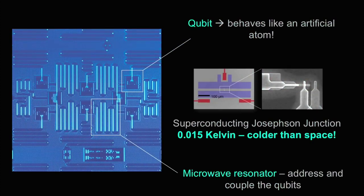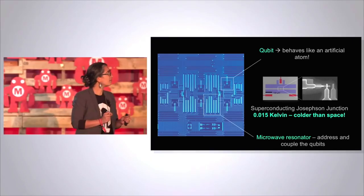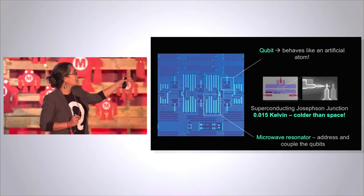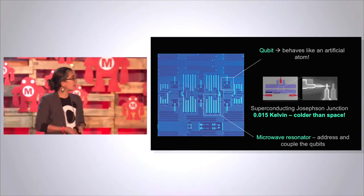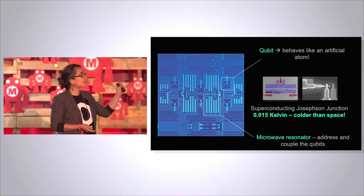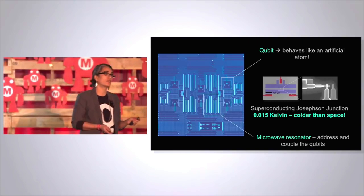Atoms behave quantum mechanically. We build an artificial atom and we make it out of a superconducting Josephson junction coupled to a microwave resonator. So this is what it actually looks like on the chip. You have these squares that are your qubits and these squiggly lines are your microwave resonators and inside of the qubit is a superconducting Josephson junction.